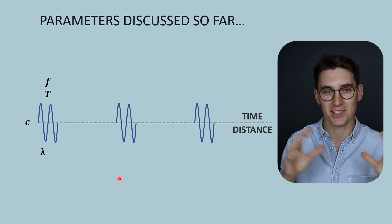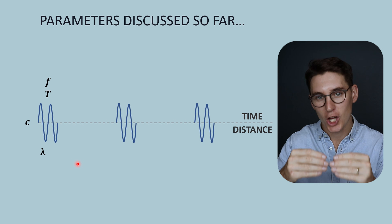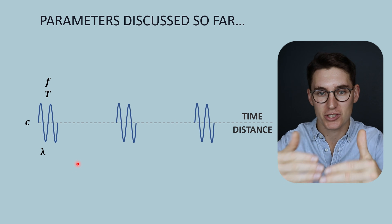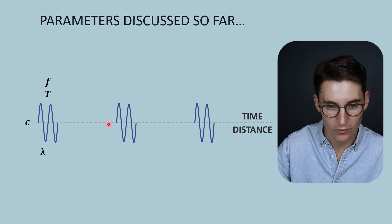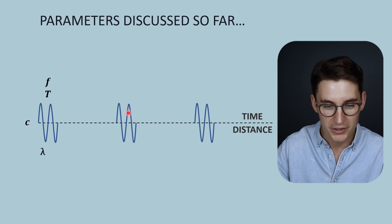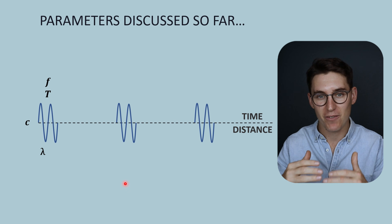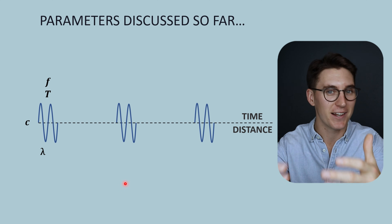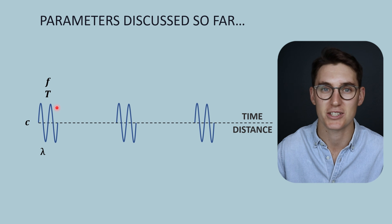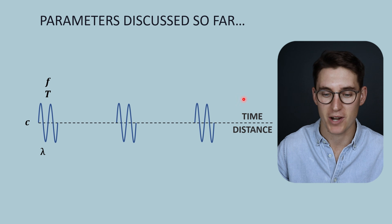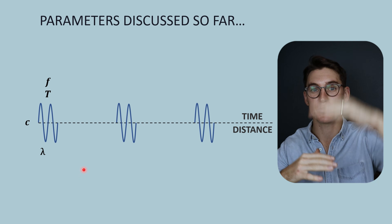When discussing ultrasound in this module, we'll be building on this diagram. When we take ultrasound images, we send a pulse of ultrasound into the tissue and then wait for it to bounce off tissues — this period is when we are listening for those echoes to return. We then send another pulse and listen again. Everything above the line in this diagram is a time parameter; everything below is a distance parameter. Anything on the line itself is a combination of both time and distance.